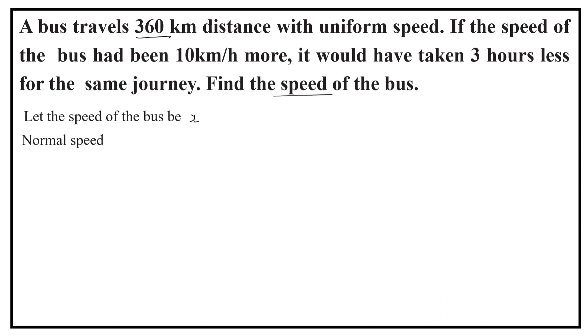Distance covered by the bus is 360 km. Speed is x km per hour. You already know that speed is equal to distance by time. So, time t is equal to distance by speed. So, if the speed is x km, the time taken by the bus is 360 by x.